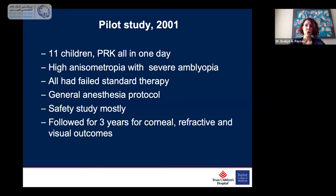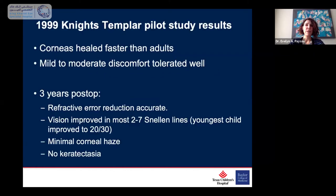These children all had high anisometropia and severe amblyopia and were end-stage patients who had failed standard therapy for a very long time. We designed an anesthesia protocol and it was basically a safety study, because we had no idea what children's corneas would do with an excimer laser treatment. We followed these children for three years. What we found was that corneas healed slightly faster than adults, and it was very well tolerated with mild-to-moderate discomfort. The refractive error reduction was accurate — we got more response on high myopic patients than our adult nomograms predicted. Visual acuity also improved, with many children improving two to seven lines on the Snellen chart. One child improved to 20-30. There was minimal corneal haze and no keratectasia.